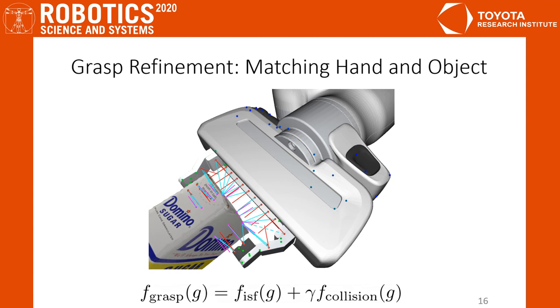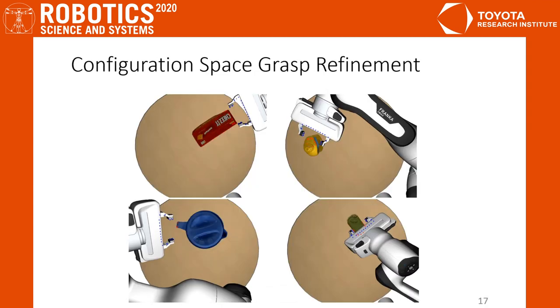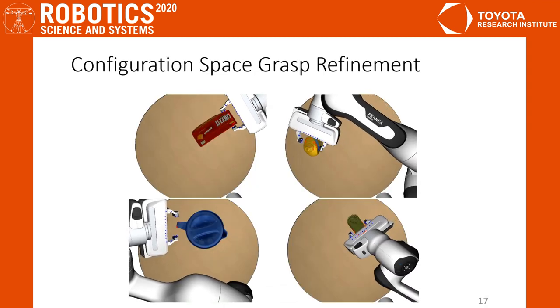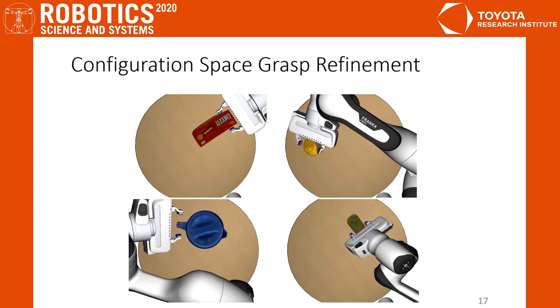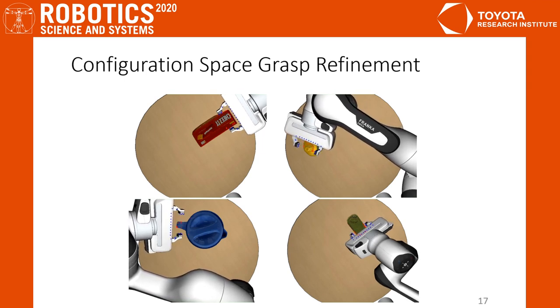Specifically, we optimize the gripper to match with the object surface and penalize collision using signed distance fields. The objective is optimized with gradient descent in the configuration space. In this slide, we can see that the gripper gradually approaches the object for a better grasp while avoiding collision.